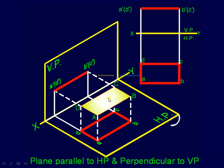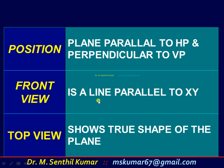So if the plane is parallel to HP and perpendicular to VP, the front view is seen as a line and in the top view you can see the plane as such. For this kind of problem, you have to start the top view first, then complete the front view. Generally, you have to start the view wherein you are able to see the plane completely. The plane parallel to HP and perpendicular to VP: front view is a line, top view shows the true shape of the plane.